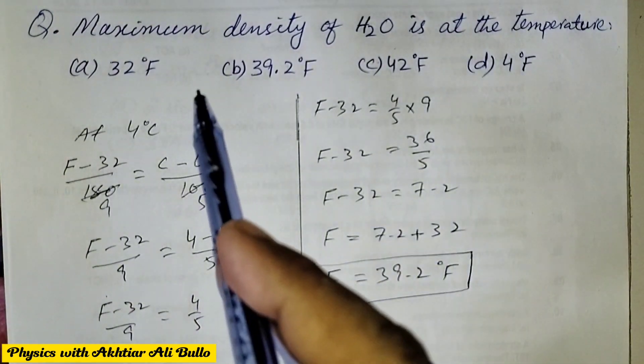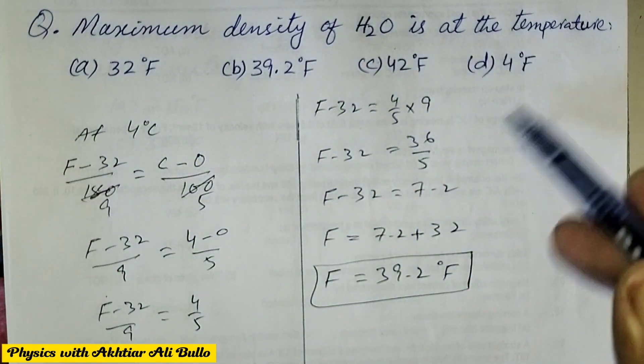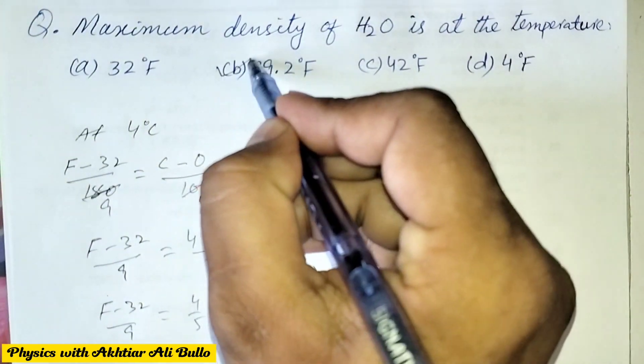Means maximum density of H2O means water is at the temperature 39.2 degree Fahrenheit. So the correct option is B.